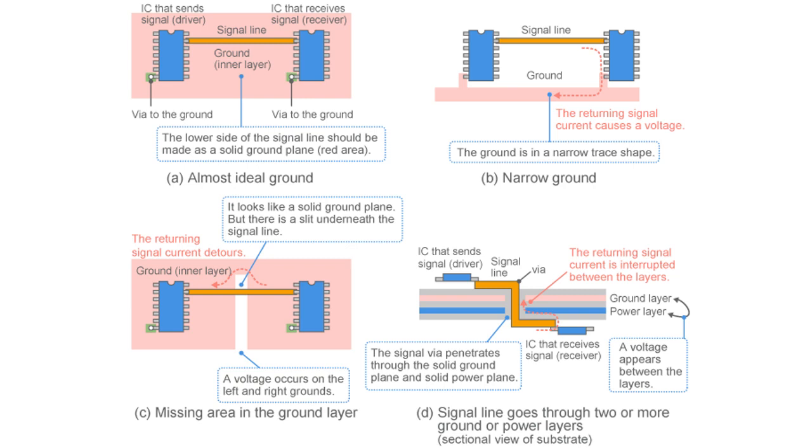However, a ground plane requires a dedicated PCB layer which may not be feasible for two-layer PCBs. In such case, designers are recommended to use ground grids as shown in figure. The inductance of ground in this case will depend on the spacing between the grids.